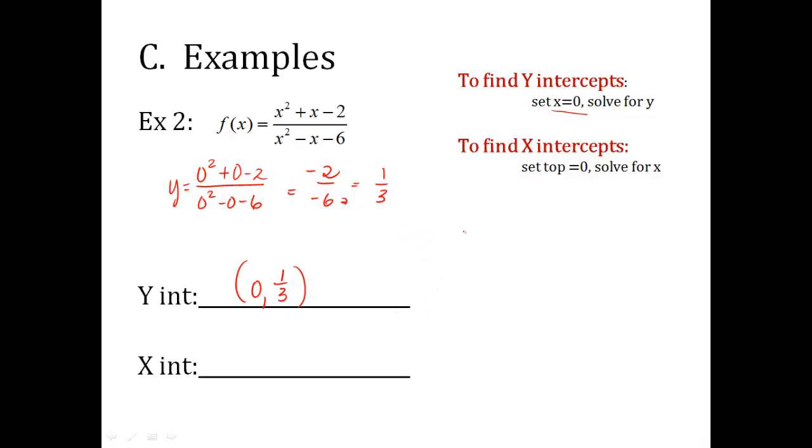For x-intercepts, just the top, set it equal to 0. x squared plus x minus 2 equals 0. It's a quadratic. I have to factor. So a times c is negative 2. What two numbers multiply to give you negative 2 but add to give me a positive 1? It would be a positive 2 and a negative 1. Divide by a.